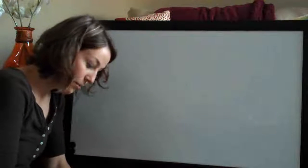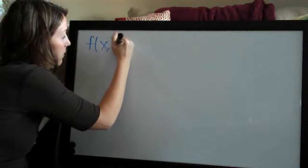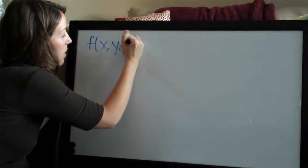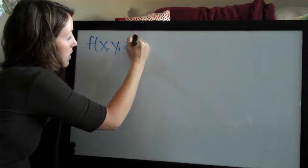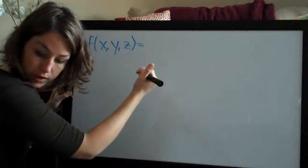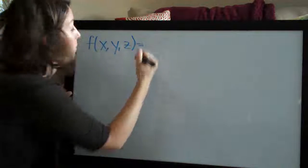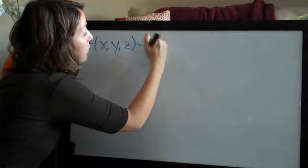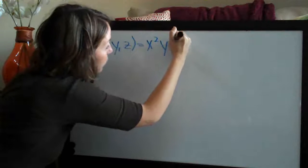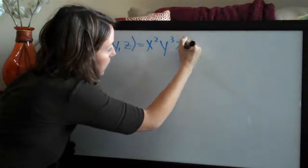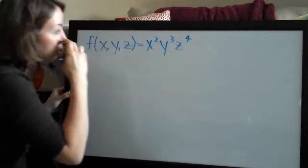Hey everyone, welcome back. Today we're going to be doing some partial derivative problems. The first one is f(x, y, z) = x squared times y cubed times z to the fourth.